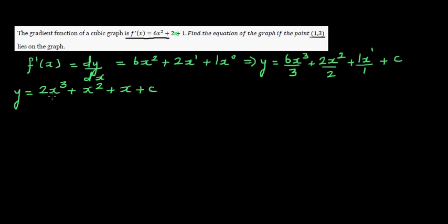When differentiating, you drop the power down and multiply. So 2 times 3 is 6, and decrease the power by 1, giving 6x² + 2x + 1. The differentiation of a constant is 0, confirming the integration is correct.